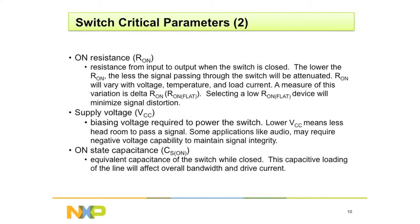So that takes us to some more switch critical parameters. When the switch contacts are closed, what is the resistance — how much force does it take for the current to flow through the switch contacts? What is the supply voltage — how many volts does it take to operate the switch? Obviously there's some minimal amount, and how you set that determines which switch you use. And finally, something called the on-state capacitance.